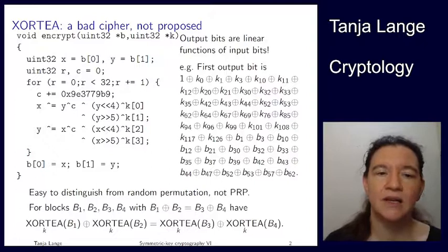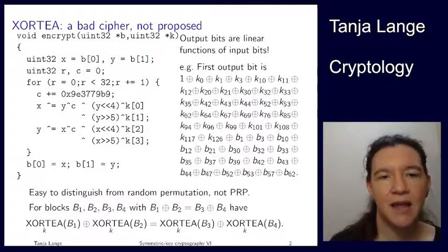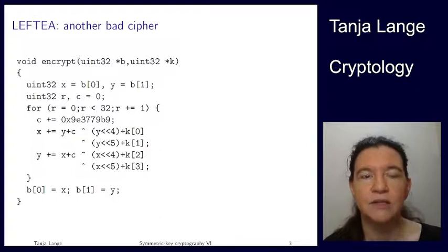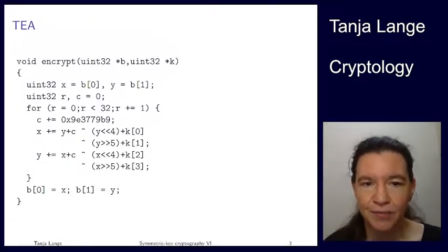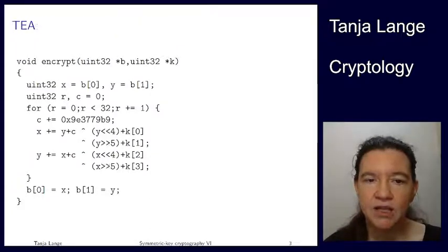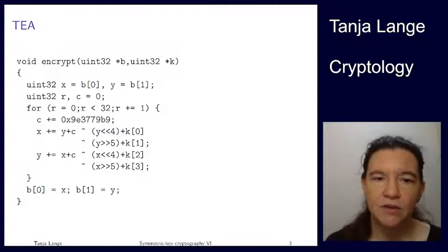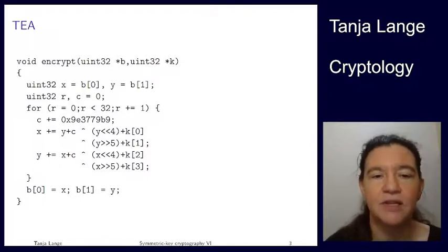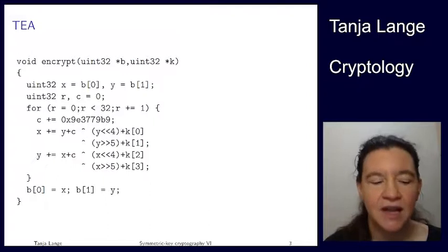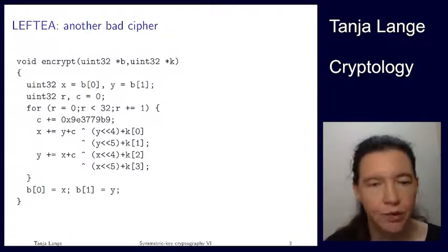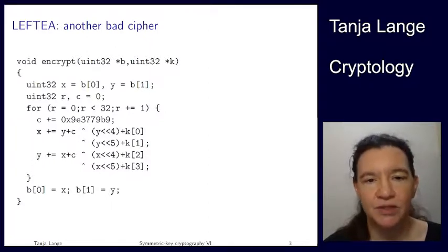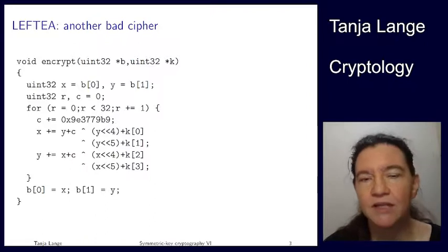This is the normal TEA again, and now I'm going to do a different change: Left-TA. This is an even smaller change. The only difference is that the second input in the updates of X and Y changes from a right shift to a left shift. The normal TEA has a right shift by 5 for Y, and Left-TA has a left shift. Maybe you prefer left shifts because a right shift isn't quite a division by 32 — or whatever the reason. Let's look at the effects of this.